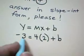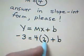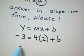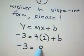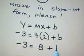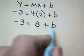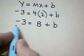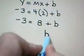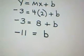So we have negative 3 equals 4 times 2 plus b. Negative 3 is equal to 8 plus b. To find b, we subtract 8 from both sides, which gives us that b is equal to negative 11.